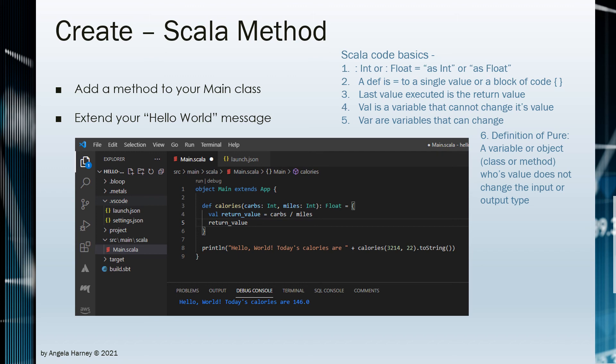Once you have your Hello World message running, you can add more Scala code to your main object. The method shown here is called 'calories'. It takes in two parameters: one called 'carbs' and one called 'miles'. The colon is an assignment operator to a data type for the parameters. After the parentheses is an assignment operator to a data type for the method — in this case it will output a float. The method is equal to the code block; its action divides the parameters and returns the variable value.